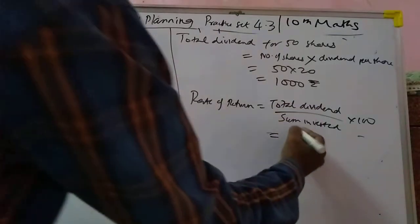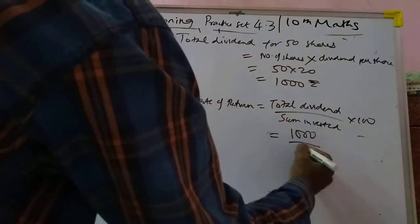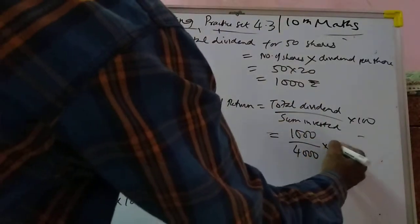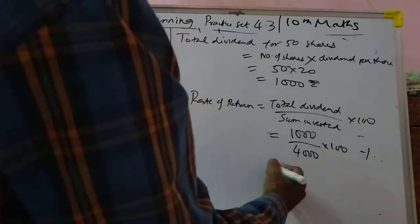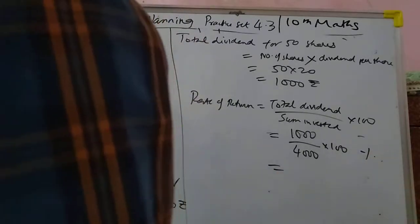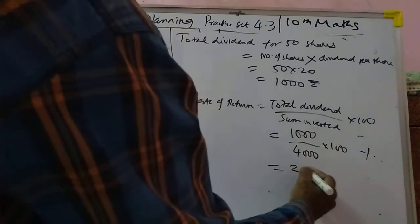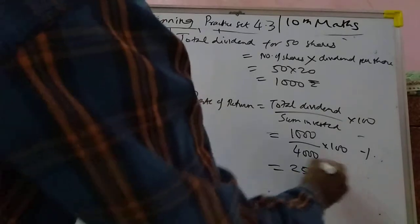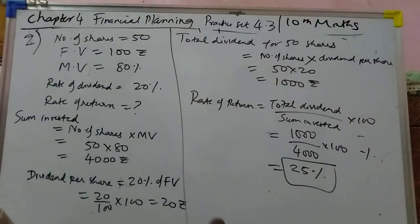Rate of return equals total dividend 1000 upon sum invested 4000 into 100. Simplifying, you will get 25%. I hope you got this.